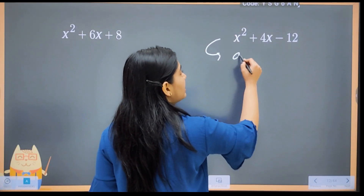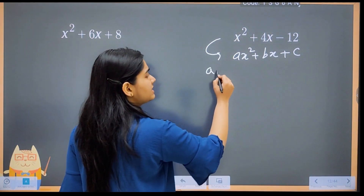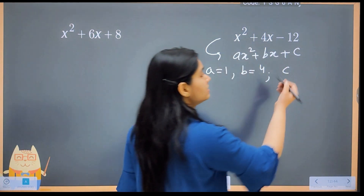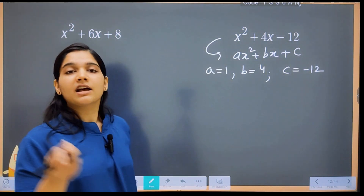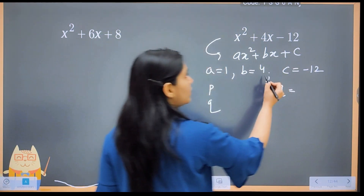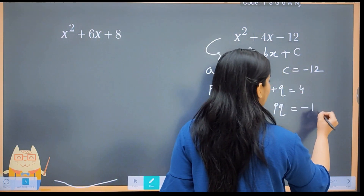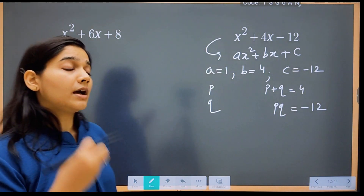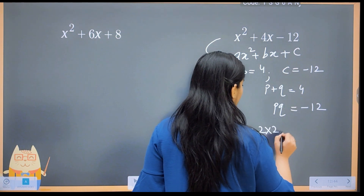Second example: comparing with ax² + bx + c, here a = 1, b = 4, and c = −12. Again we need to find two numbers p and q such that their sum equals b = 4 and their product equals a × c = 1 × (−12) = −12.